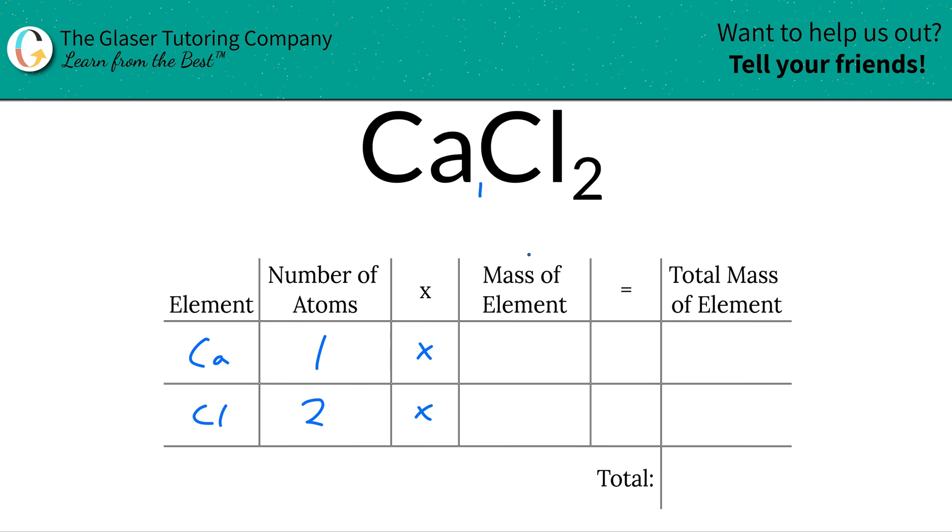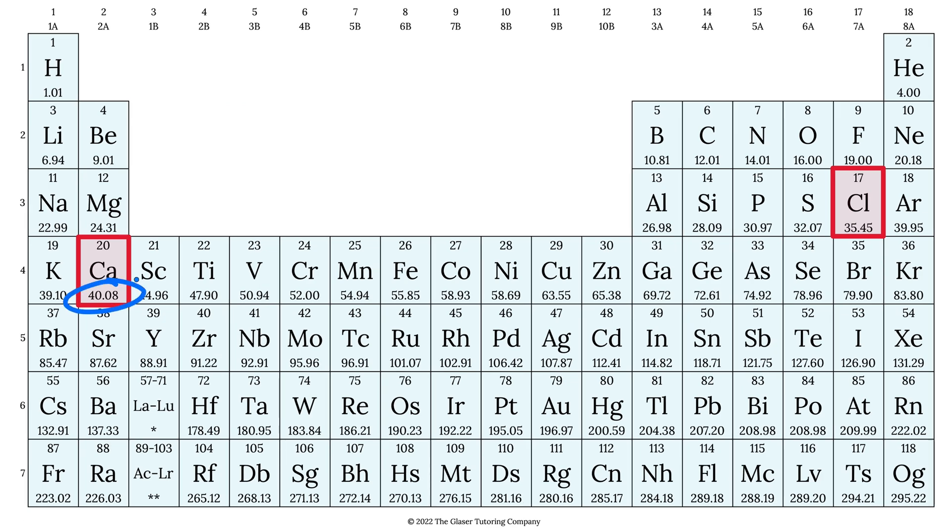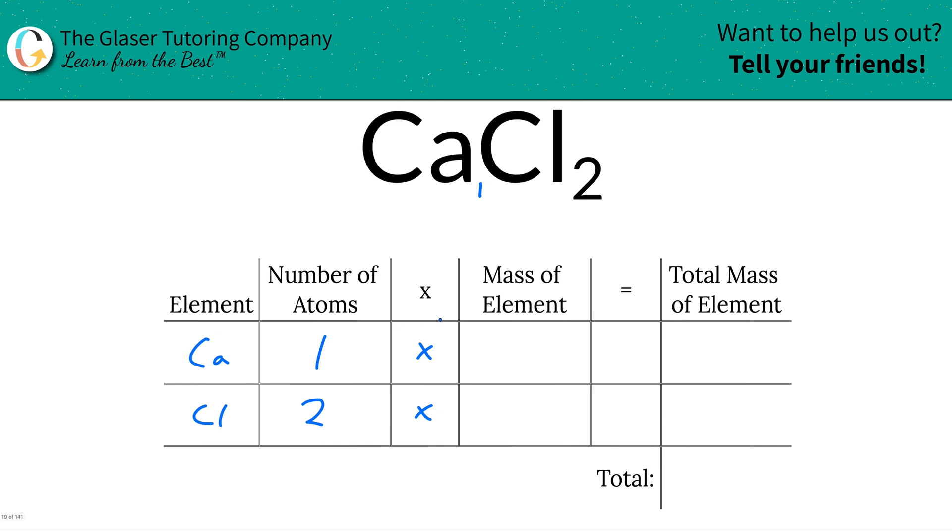Next what we're going to do is take those number of atoms and multiply it by the mass of each particular element. That's where the periodic table comes into play. Here's calcium's mass, 40.08. Here's chlorine's mass, 35.45. So let's simply plug that on in. This is 40.08. This is 35.45.